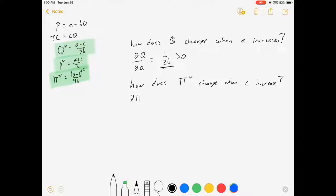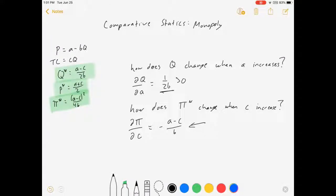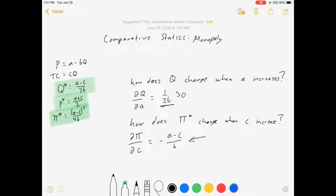We go derivative of profit with respect to cost is equal to minus A minus C over B. Now, as long as A is greater than C, which is as long as we're in business basically, this thing is going to come out negative. Higher costs mean lower profits. But specifically, I have exact values I can substitute in. If I know A and C and B, I know exactly how a change in cost, how quickly it will change my profit.